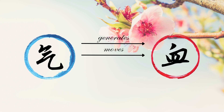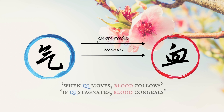Qi moves blood. Qi is the motive force for blood. Without qi, blood would be an inert substance. There is a saying about this aspect: when qi moves, blood follows; if qi stagnates, blood congeals.